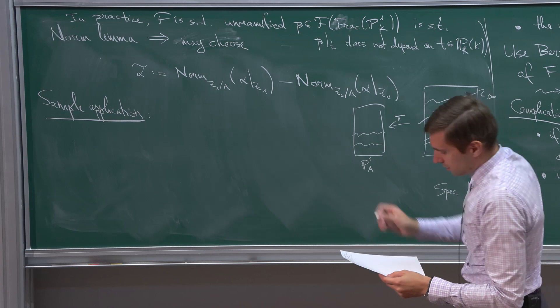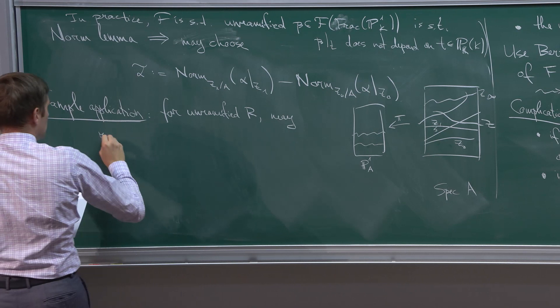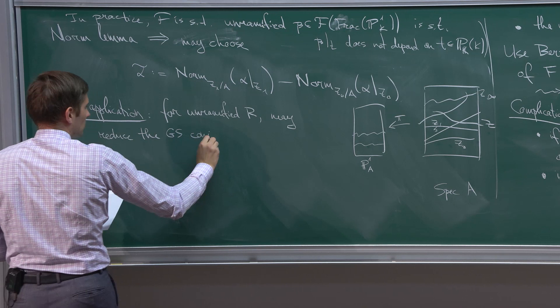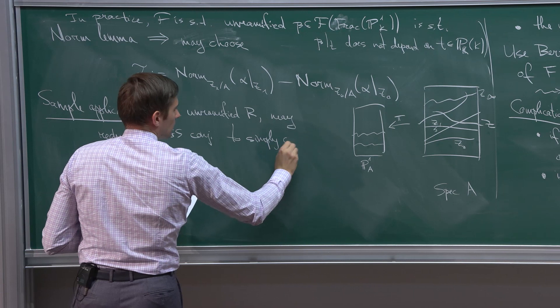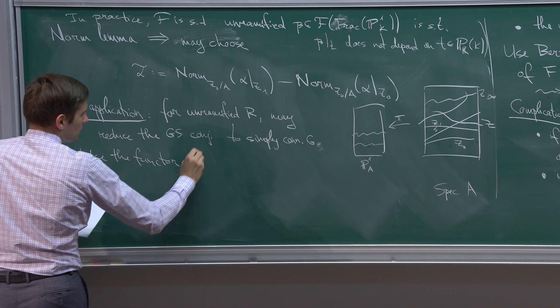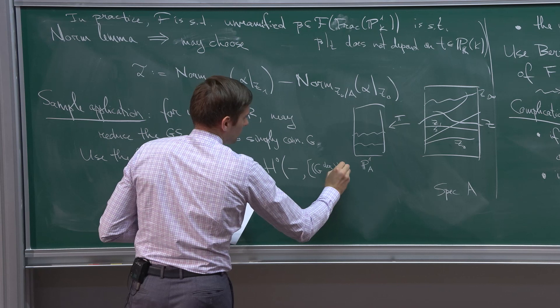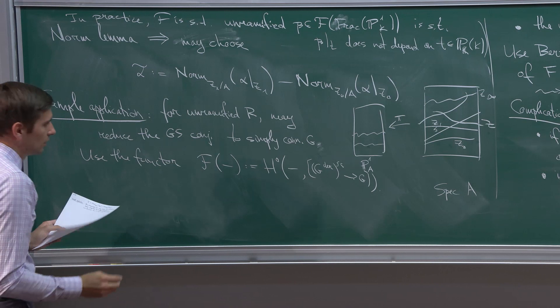As a sample application: for unramified regular R, one can reduce the Grothendieck–Serre conjecture to simply connected groups. The functor used is H^0 of a so-called crossed homomorphism from the simply connected cover of G to G itself. This secretly takes values in abelian groups because it depends only on the center, making it amenable to the norm technique. After that, long exact sequences of non-abelian cohomology allow one to control the difference between torsors under G and under its simply connected cover.